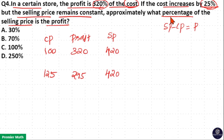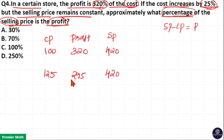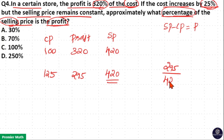Now, we need to find out what percentage of the selling price is the profit. Profit is equal to 295. So, we need to find out: 295 is how much percentage of the selling price 420?